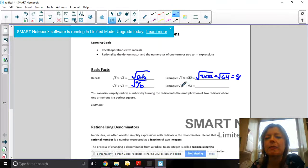If you have root 27 divided by root 3, that's the same thing as root 27 over 3, so root 9, which is 3.